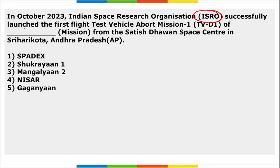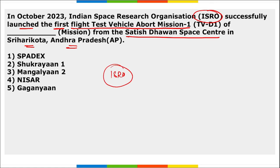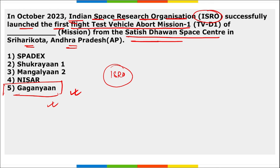ISRO successfully launched the first flight test vehicle — TV-D1 Mission 1 — of the Gaganyaan Mission from Satish Dhawan Space Centre, Sriharikota, Andhra Pradesh. This test was to verify all systems, ensure safe separation of the crew module from the test vehicle in case of an emergency, and test the crew module's ability to fly and land safely at higher altitudes.